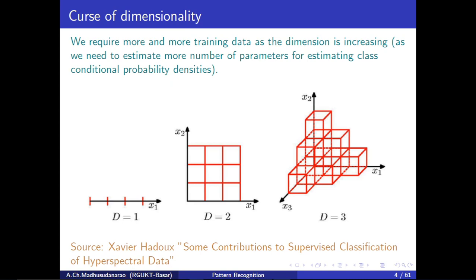Consider this one-dimensional data. We represent the input feature vector as x̄, a d×1 vector, where d is the dimension. For example, d=1 means x̄ is 1×1; d=2 means x̄ is 2×1. If d=1, we have only one feature x1. We perform min-max feature normalization so that feature values lie between 0 and 1.